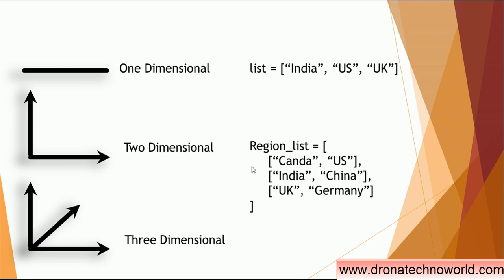The two-dimension example is: suppose you create a region list like a North America region, an Asia Pacific region, or a Europe region. In each region there will be several countries — for example, in North America we have the US and Canada; in Asia Pacific we have India and China; in the European region we have the UK, Germany, France, etc. So we have multiple regions and within each region we can have multiple countries — that's two dimensions: the list of regions and the list of countries.